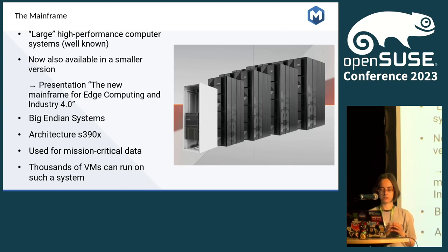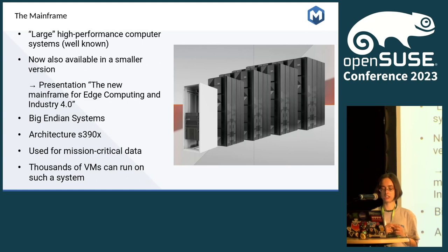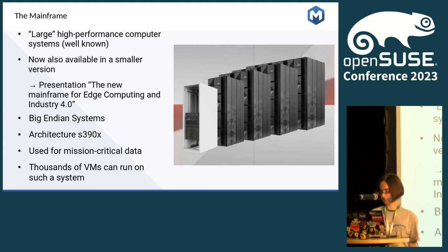Most people and developers call these big-endian systems, because there is a difference between little-endian and big-endian systems. IBM has given it the name S390X as an architecture, and it is mostly used for mission-critical data. Most customers use it for finance data like DATEV, banking systems, and insurance. One benefit is that you can run thousands of VMs on such a system. I chose this direction after writing my bachelor thesis at IBM, and you can also use it for Kubernetes and everything else.